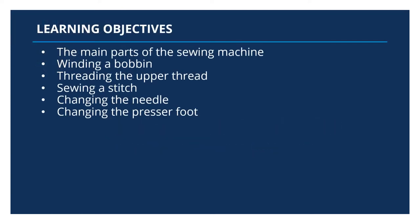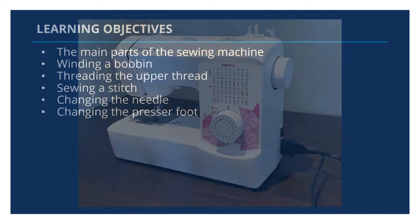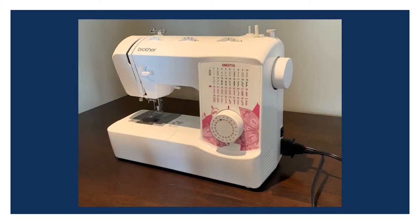In this video we will go over the main parts of a sewing machine, winding a bobbin, threading the upper thread, sewing a stitch, changing the needle, and how to change the presser foot. The sewing machine model presented in this video is not the same model available in the Maker Studio but it is very similar. Most sewing machines have the same parts and functions.